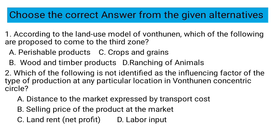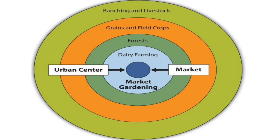Question number one: According to the land use model, which of the following are proposed to come to the third zone? Options: A) perishable products, B) woods and timber products, C) crops and grains, D) ranching of animals.